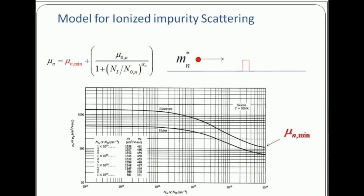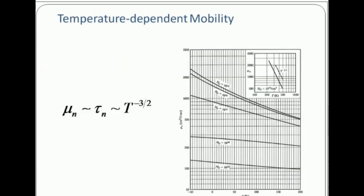Similarly, temperature dependence is very important. Again, why this T^(-3/2) is coming from: at high temperature, lots of phonons. Phonon scattering dominates, and that's what I said a few minutes ago—the phonon scattering goes as T^(-3/2). And that's why this mobility is also proportional to T^(-3/2).